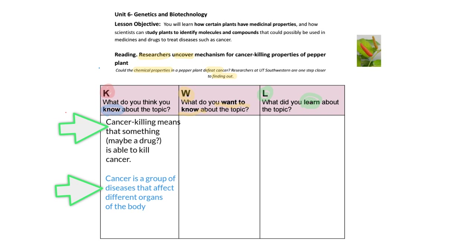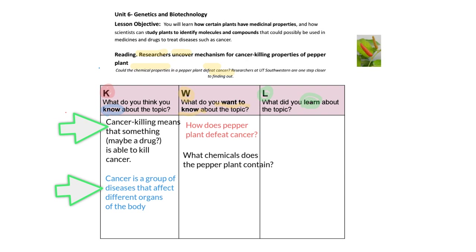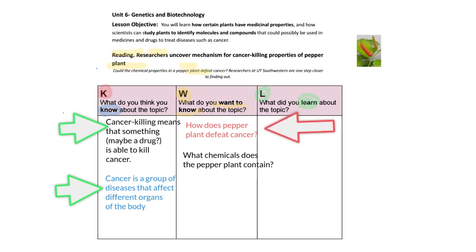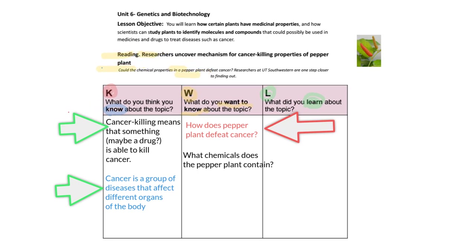Now let's move ahead and fill column number two — what do we want to know about the topic. The key here is to write questions about the topic that you would like the article to answer for you. I'm going to start by wondering: how does the pepper plant defeat cancer? I would also like to know which chemicals the pepper plant contains. Other questions you might ask: who are the researchers studying pepper plants, why are they studying it, how did they find out about these properties, and what's going to happen next because of this research?